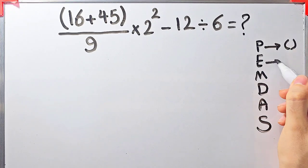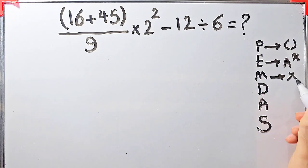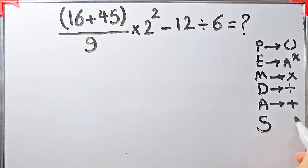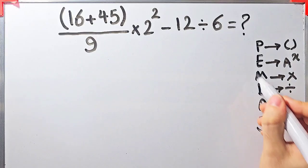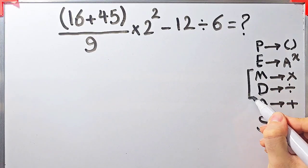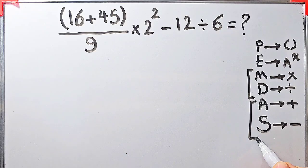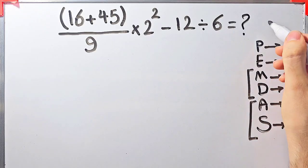In this rule: P stands for parenthesis, E stands for exponent, M stands for multiplication, D stands for division, A stands for addition, and S stands for subtraction. Multiplication and division have the same level of priority; also addition and subtraction have the same level of priority. When we have both in an expression, we start from the left and simplify.